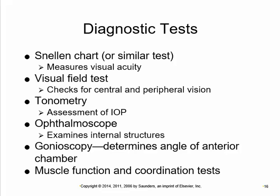Visual acuity charts with progressively smaller letters check that refraction is correct and the image focuses on the retina. If the image focuses before or after the retina, vision is blurred — a corrective lens changes this to improve acuity. The visual field test involves flashing lights and looks for peripheral and central vision problems, such as macular degeneration or other field defects.